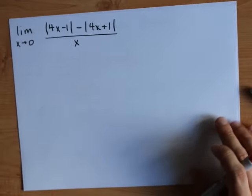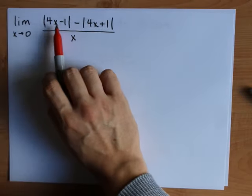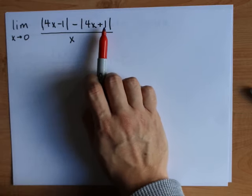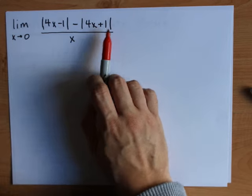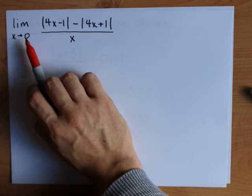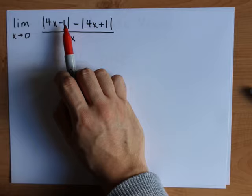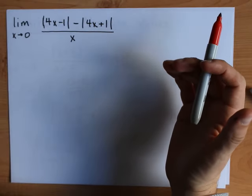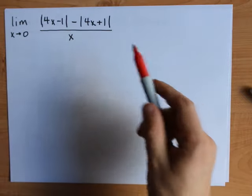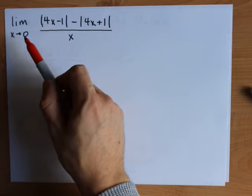This one has two sets of absolute value bars. Now you could break this into cases because this will change its sign at positive one quarter, this will change its sign at negative one quarter. But because they gave us a definite value of x where x is approaching zero, I should point out that 4 times 0 minus 1 is a negative number, 4 times 0 plus 1 is a positive number. So you already know what the effect of each absolute value bar at zero is.